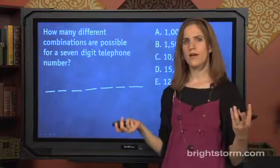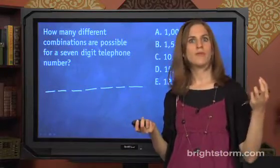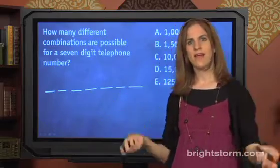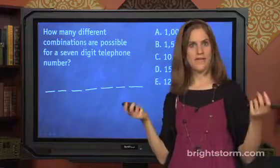For each digit of a phone number, 10 choices, right? You've got zero, one, two, three, four, five, six, seven, eight, nine—that's 10. So how many different combinations are possible for a seven-digit number?